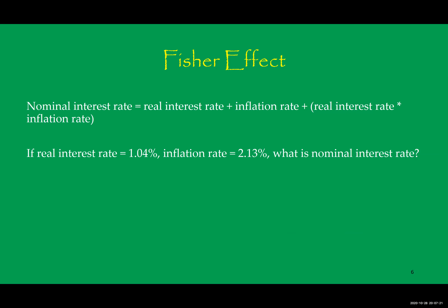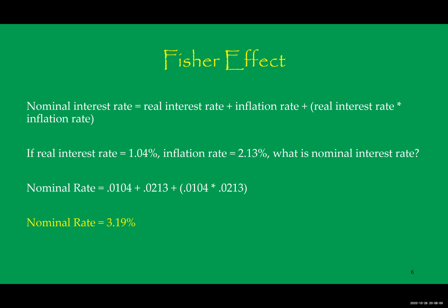Let's look at an example. If the real interest rate is 1.04% and the inflation rate is 2.13%, what is the nominal interest rate? You can use the Fisher Effect equation to figure it out. The nominal interest rate equals 0.0104 plus 0.0213 plus the real interest rate times the inflation rate. Working through the math, we determine that the nominal rate is 3.19%. Notice that it is higher than the real interest rate due to inflation.